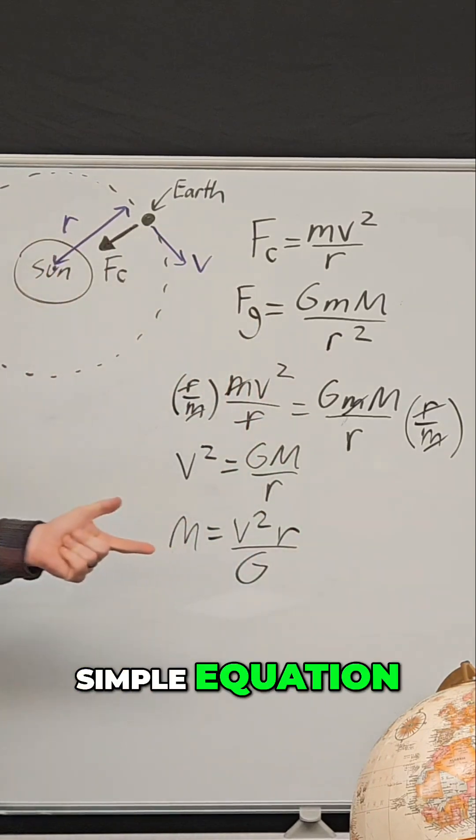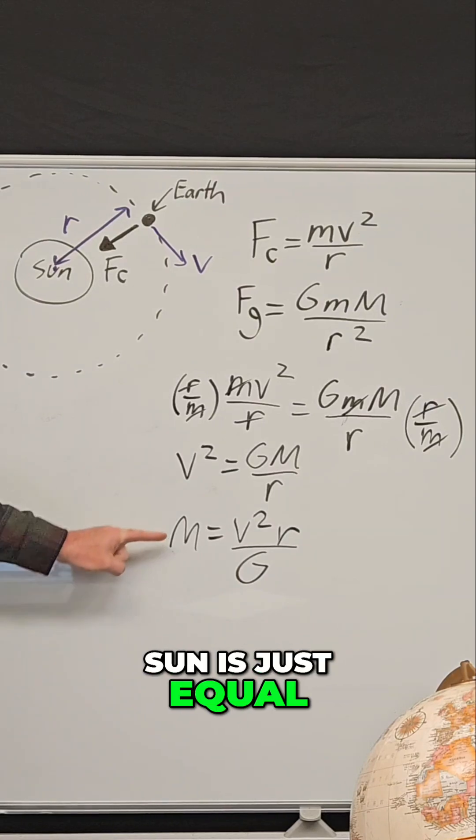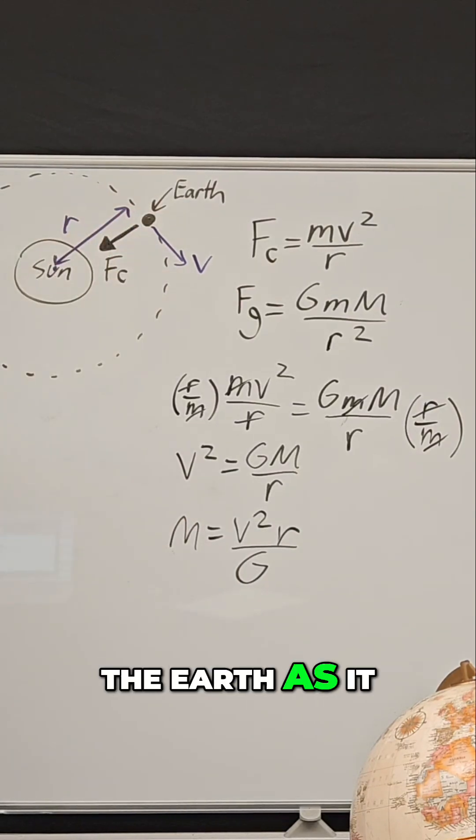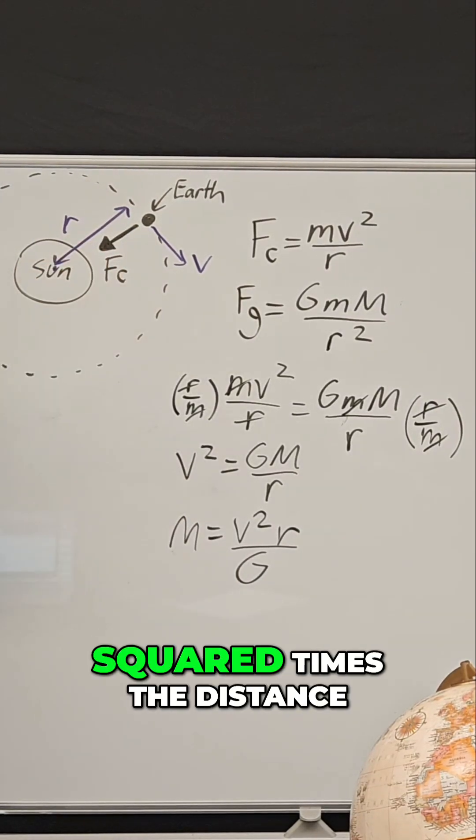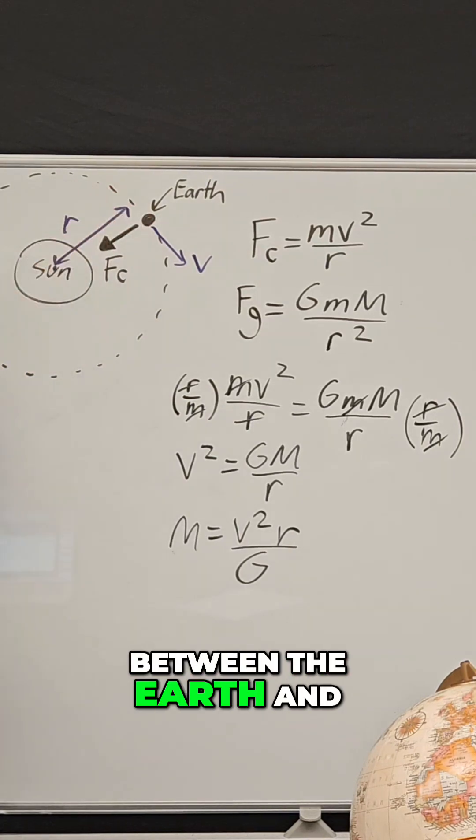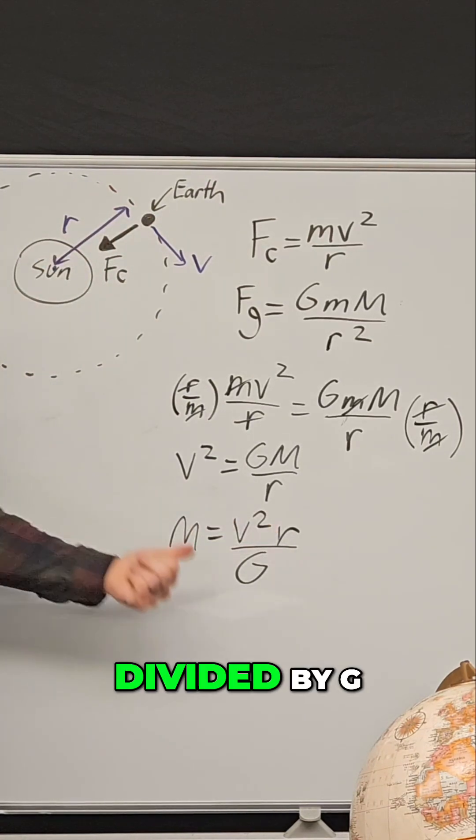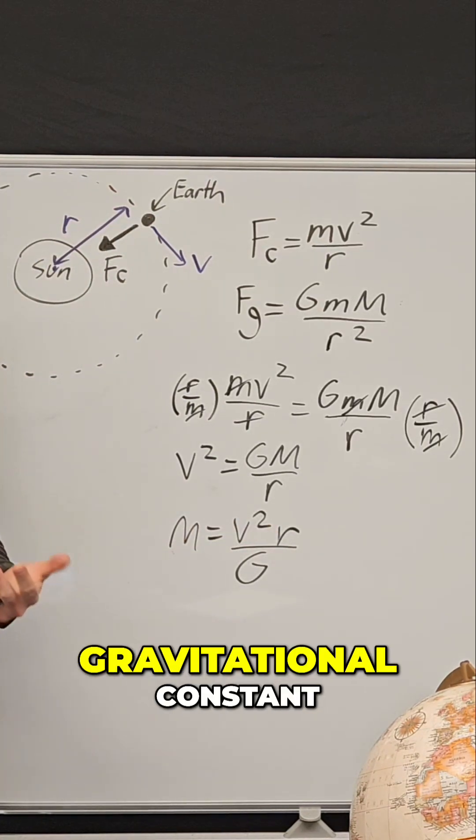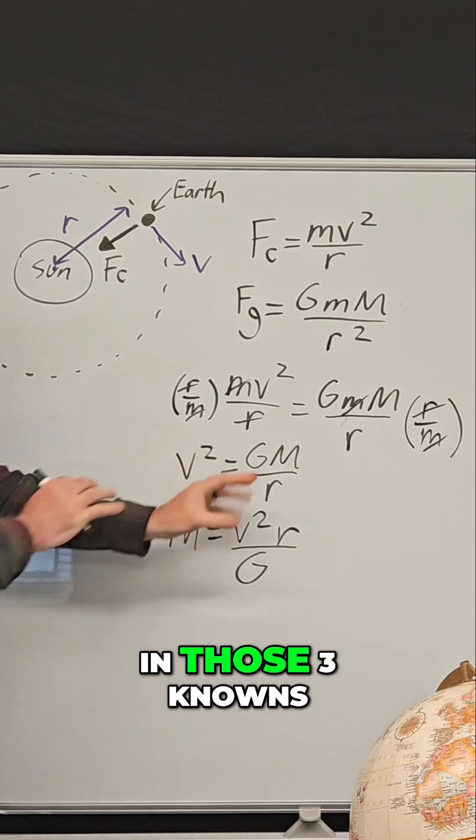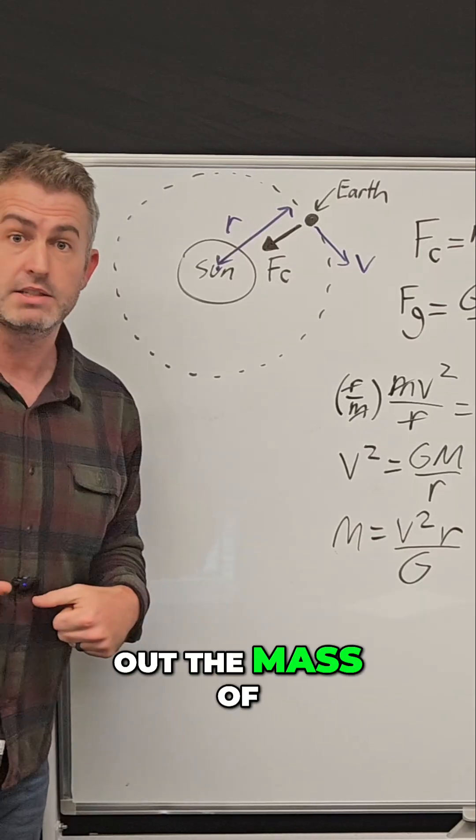So it's M equals V squared times r over G. And so with this simple equation, the mass of the sun is just equal to the velocity of the earth as it goes around the sun squared times the distance between the earth and the sun, which we called r, divided by G, which is the universal gravitational constant. And just by plugging in those three knowns, we can actually figure out the mass of the sun.